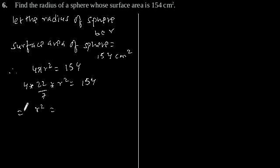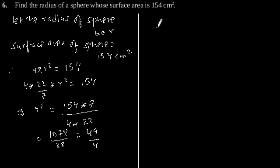This implies r² = (154 × 7) / (4 × 22). This equals 1078 / 88. By simplifying this, we get 49/4, so r² = 49/4.